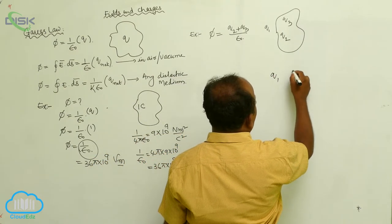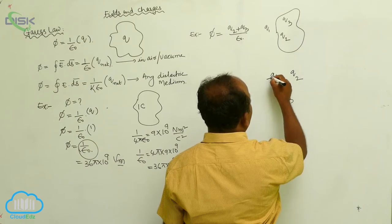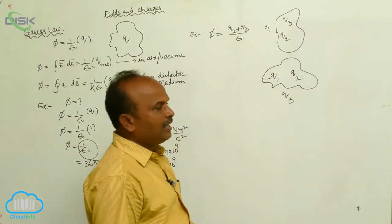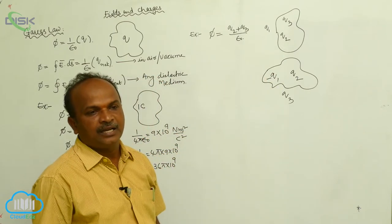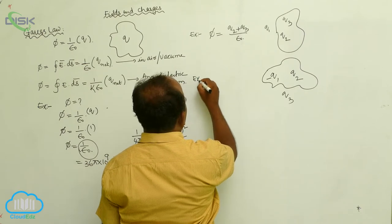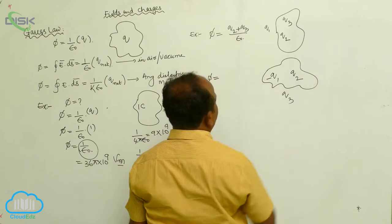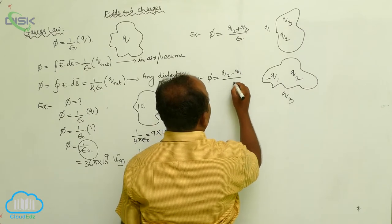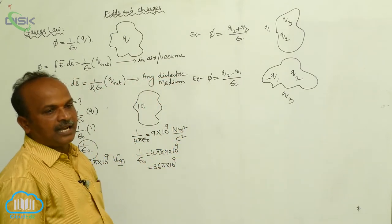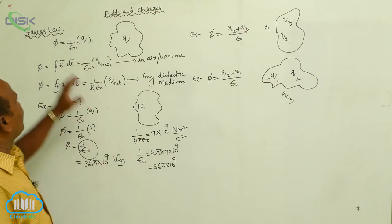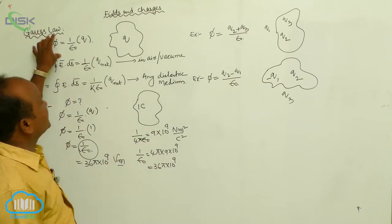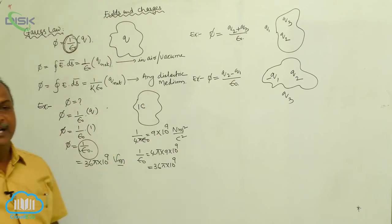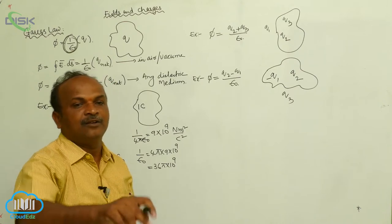Next, consider charges Q1, Q2, and Q3 where Q1 is a negative charge. Choose any arbitrary closed surface. In this arbitrary surface, what is the electric flux? The net charge inside is minus Q1 plus Q2, therefore the electric flux equals (Q2 minus Q1) by epsilon-not. This is Gauss's Law: the flux passing through any closed surface is equal to 1 by epsilon-not times the net charge enclosed by that closed surface.